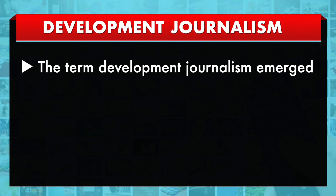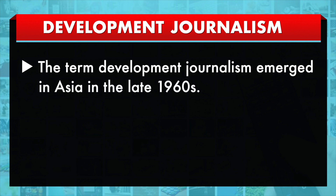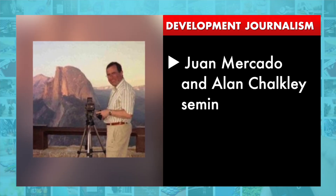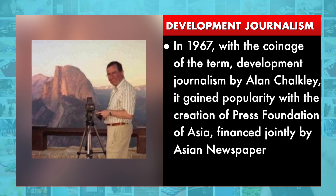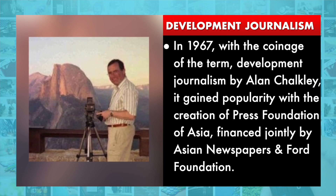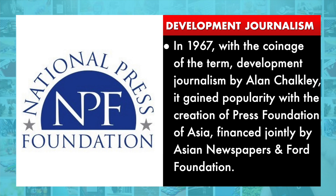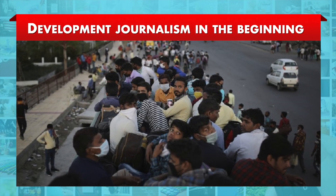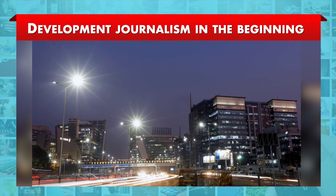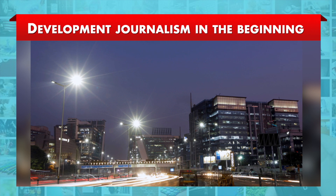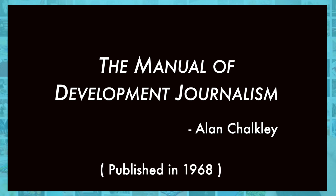The term development journalism emerged in Asia in the late 1960s, more specifically in the Philippines, through journalists such as Joanne Mercado and Alan Chocle, when they organized a seminar on development journalism. In 1967, with the coinage of the term development journalism by Alan Chocle, it gained popularity with the creation of the Press Foundation of Asia, financed jointly by Asian newspapers and the Ford Foundation. Those who conceived development journalism believed that national development depended heavily on economic development and felt that journalists trained in economics could report competently about problems of a developing nation. Therefore, Alan Chocle's book published in 1968, The Manual of Development Journalism, emphasized economics and suggested training for journalists in economic reporting.